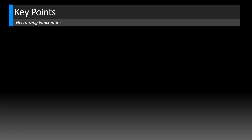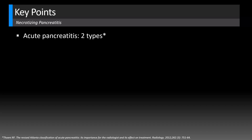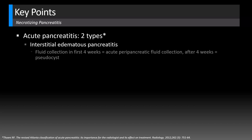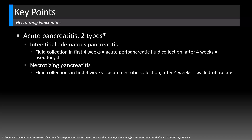Let's look at some key points for necrotizing pancreatitis. There are two types of acute pancreatitis established by the revised Atlanta classification in 2012. Interstitial edematous pancreatitis is when there's edema involving the pancreatic parenchyma, which otherwise enhances normally. With that type, a fluid collection in the first four weeks is an acute peripancreatic fluid collection; after four weeks, it becomes a pseudocyst. In necrotizing pancreatitis, a fluid collection in the first four weeks is an acute necrotic collection; after four weeks, it's walled-off necrosis.